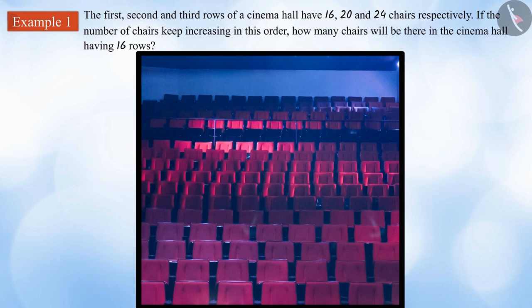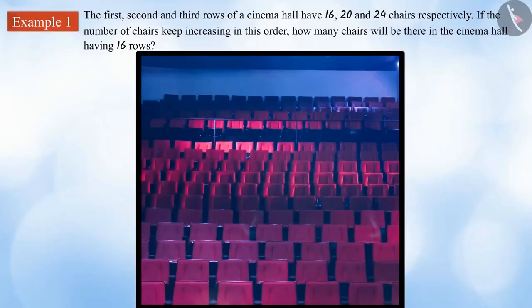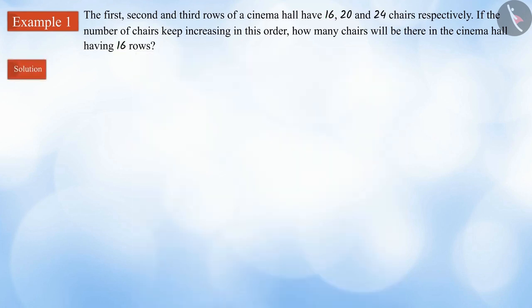Can you tell me what we need to do first in order to solve this question? Absolutely correct. First of all, we have to make the list based on the data provided in the question. According to the question, there are 16 chairs in the first row, 20 chairs in the second row and 24 chairs in the third row.